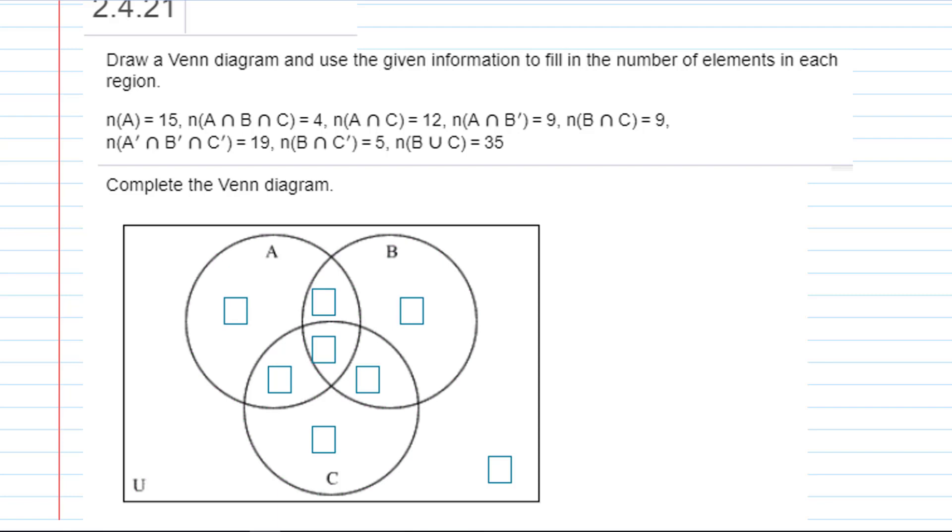Hi, I'm Miss Hearn. Let's get started. When you have a problem that says draw a Venn diagram and use the given information to fill in the number of elements in each region, you need to consider each of these facts as a piece of the puzzle and use those facts to fill in the spaces one at a time. You're going to need to identify which regions they're describing with each set operation. First, let's go ahead and number the regions.